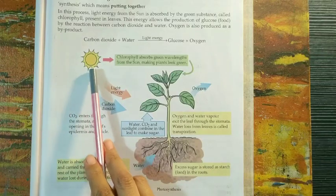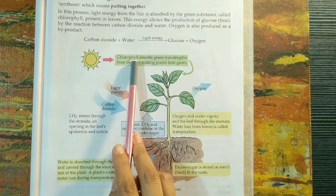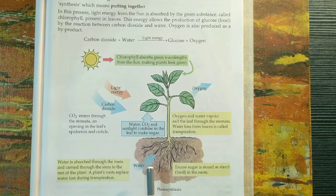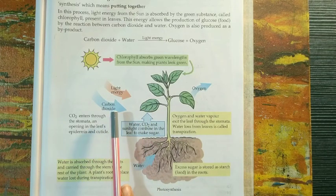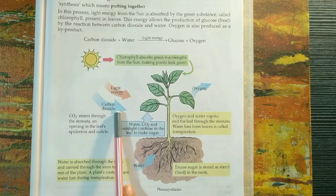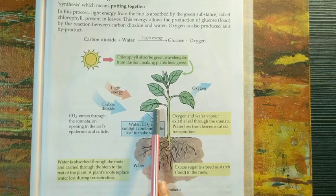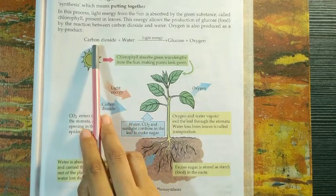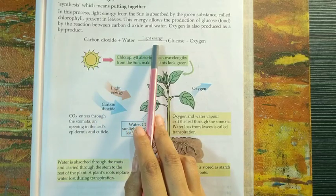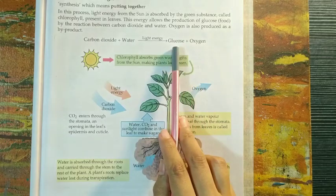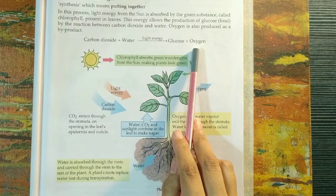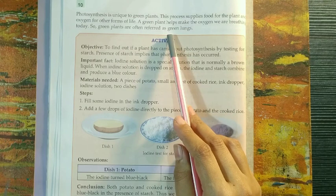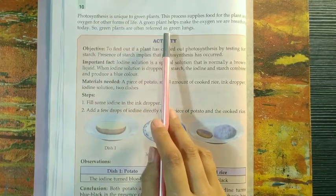Sunlight is trapped by chlorophyll present in leaves. Plants get water from the soil — roots absorb the water for photosynthesis. Carbon dioxide is a gas present in the atmosphere, and plants absorb it through stomata. Stomata are tiny openings present on leaves that help to exchange gases. Carbon dioxide plus water, in the presence of sunlight, produces glucose and oxygen. Oxygen is released into the atmosphere as a by-product, which is why plants are known as green lungs.